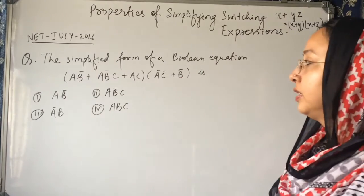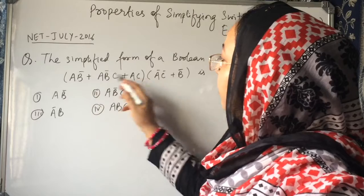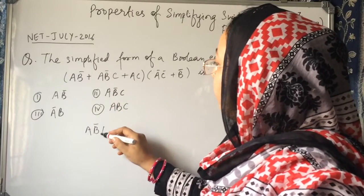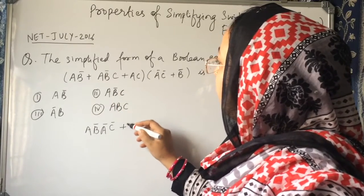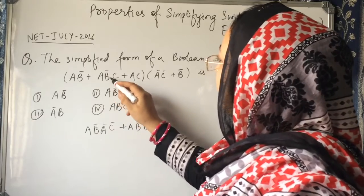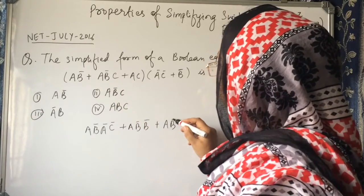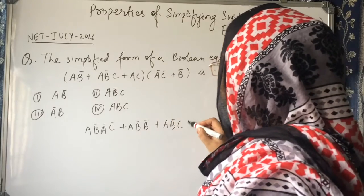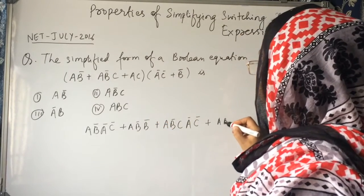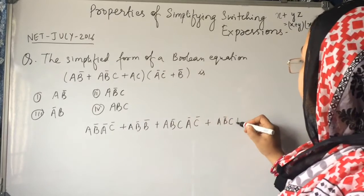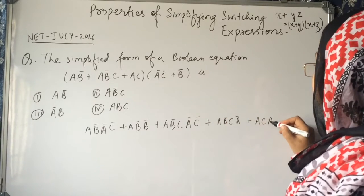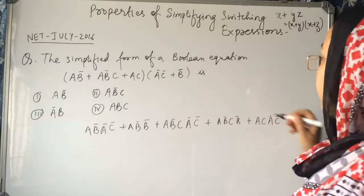How we will solve this question? What we have to do is expand and open the braces: ab̄ into āc̄, plus ab̄ into b̄, plus ab̄c̄ plus ab̄ · ā, plus ac into āc̄, plus ac into b̄.